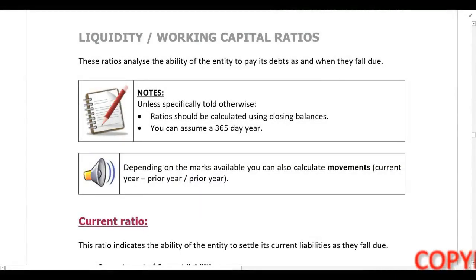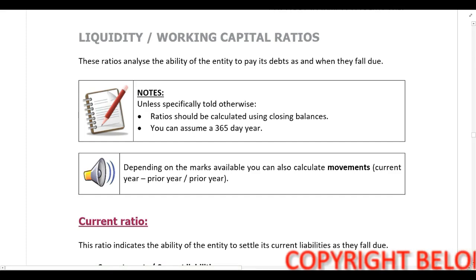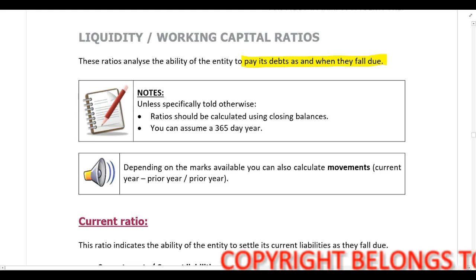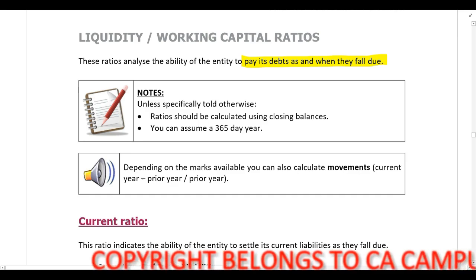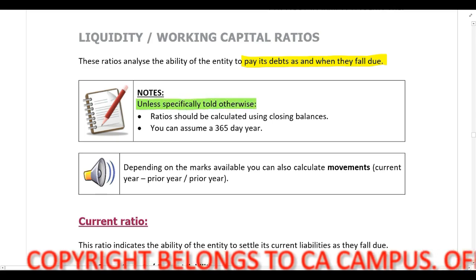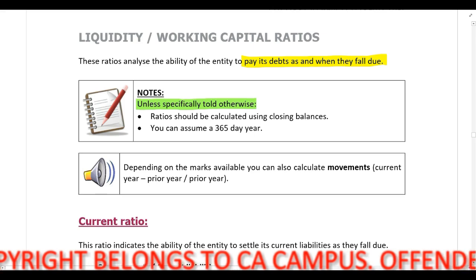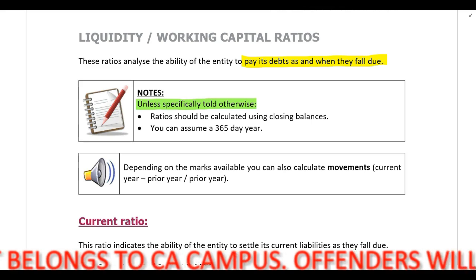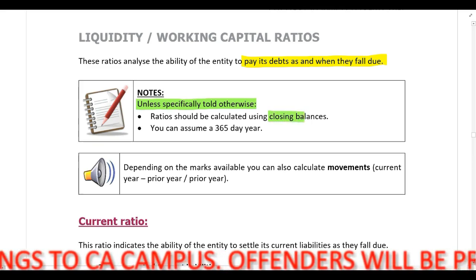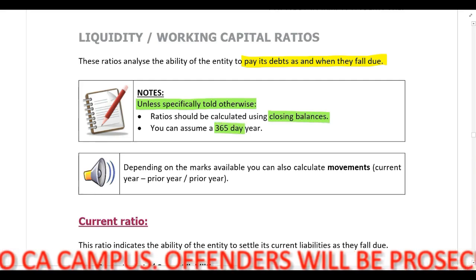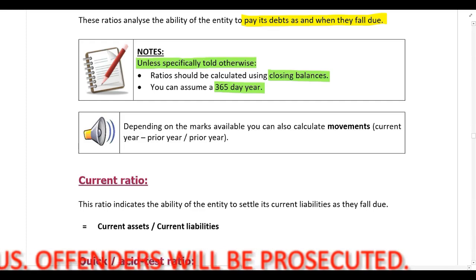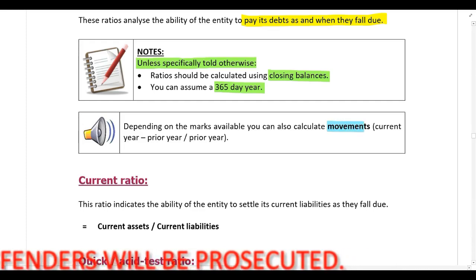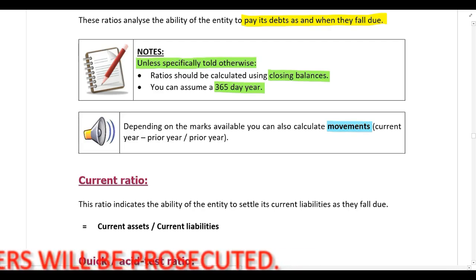Next we are going to look at liquidity or working capital ratios. These ratios analyze the ability of the entity to pay its debts as and when they fall due. When performing these calculations, unless you are specifically told otherwise — and if you are told otherwise you do as told in the question — if the question is silent, you can calculate all of these ratios using closing balances and you can assume there are 365 days in a year. Depending on the marks available, you can also calculate movements: first calculate all of the ratios that fall under this heading.